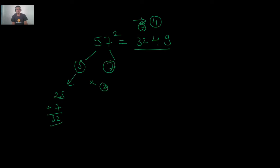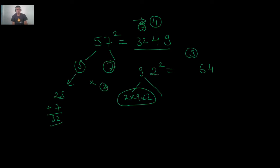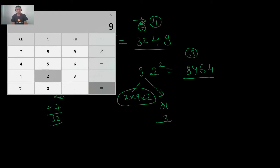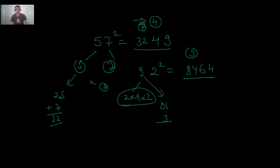One more example: 92². Step 1: 2² = 4; nothing carried. Step 2: 2 × 9 × 2 = 36; write 6, carry 3. Step 3: 9² = 81; add 3 to get 84. Result: 8464. Verified: 8464 is correct. This is how we calculate the square of a two-digit number — it takes only 2–3 seconds.